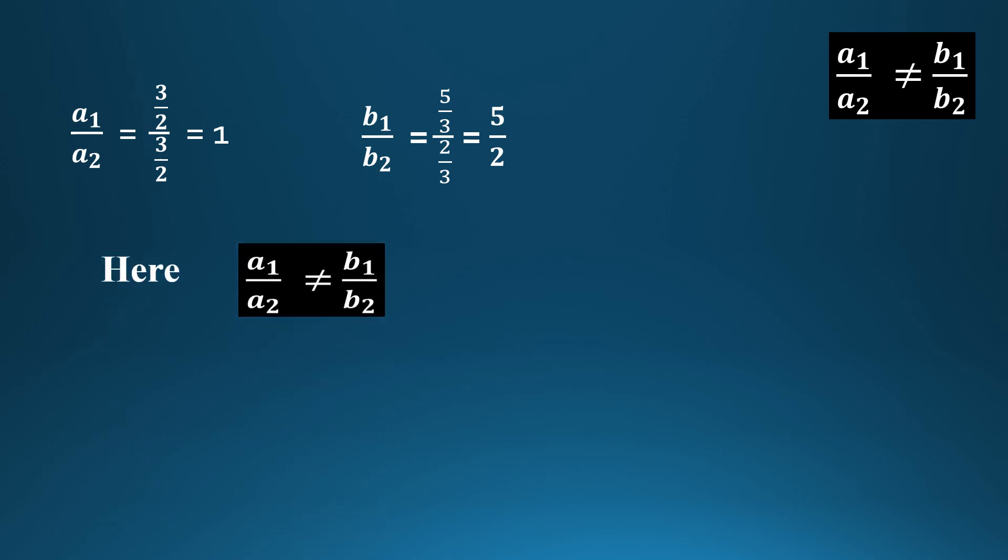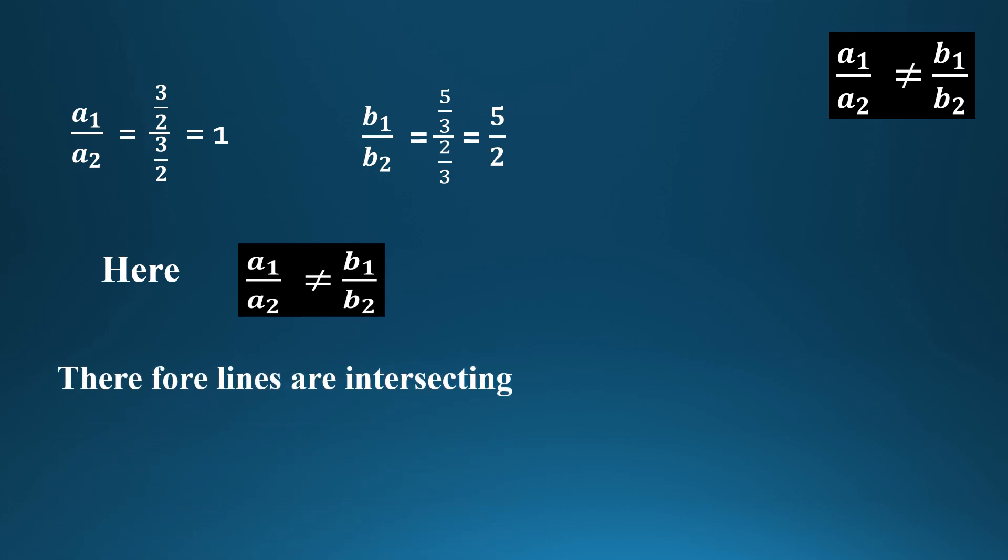Since a1/a2 is not equal to b1/b2 — that is, (3/2)/(3/2) = 1 but (5/3)/(2/3) = 5/2, which are not equal — therefore the lines are intersecting.